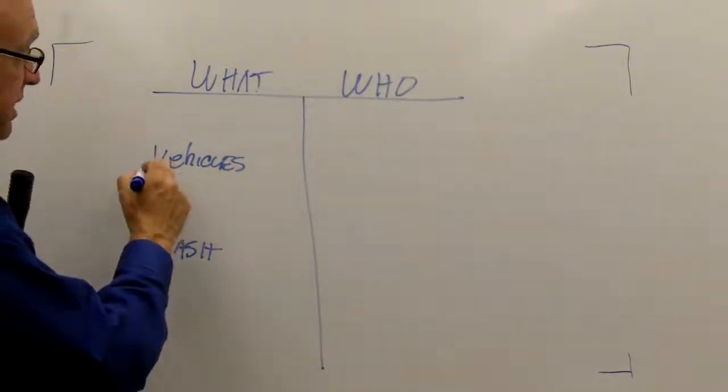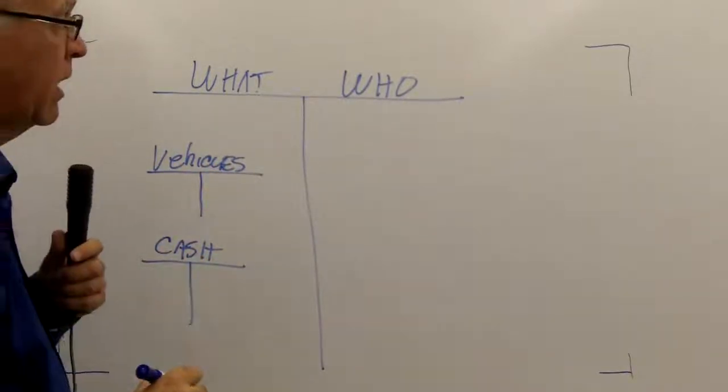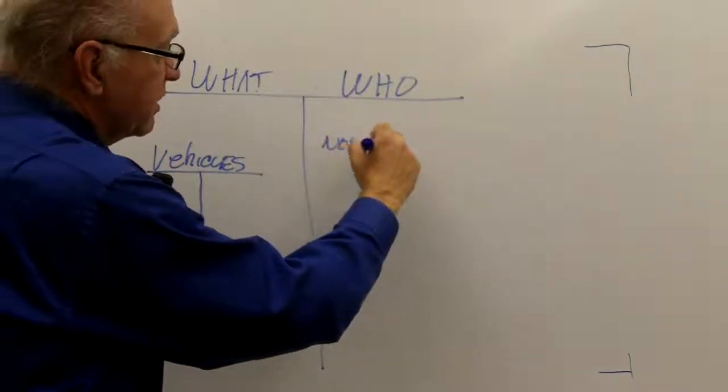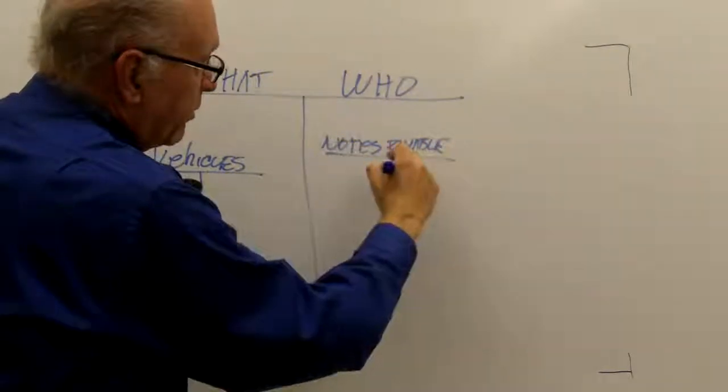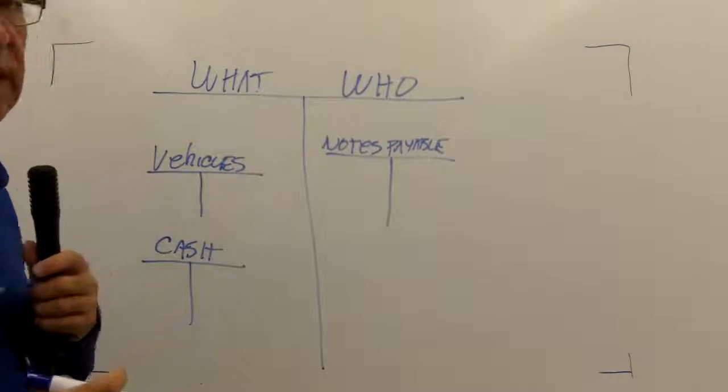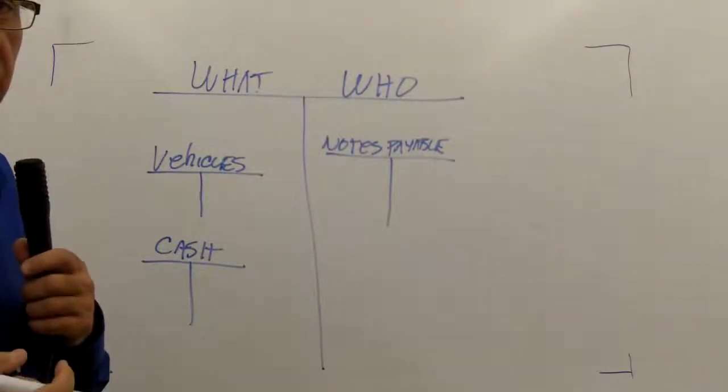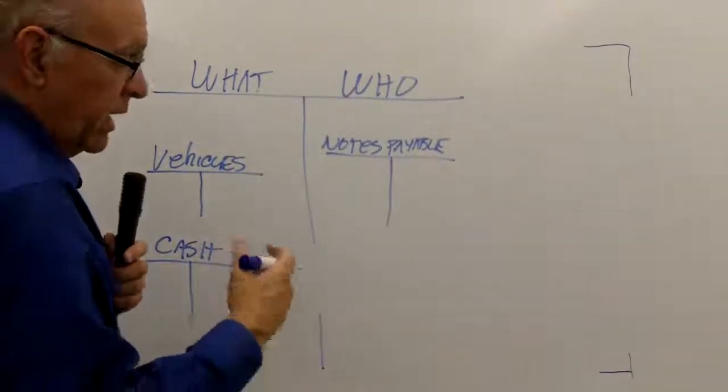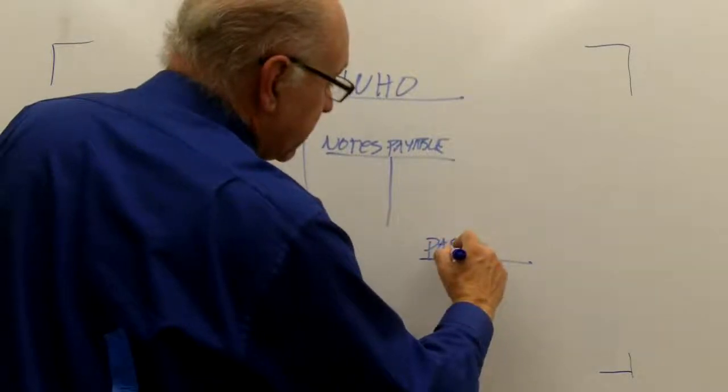I could make little T's for these also. In fact, I will. On the who side, remember we had borrowed something from the bank, so I will have a notes payable. In fact, I'll make a T for that. I'm going to break down my owner's equity into something called paid-in capital. When I first initiate my company, I pay in capital, and that is my equity. So I'm going to have a paid-in capital.